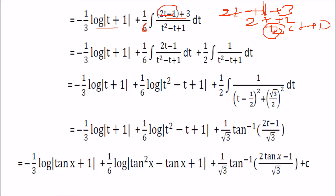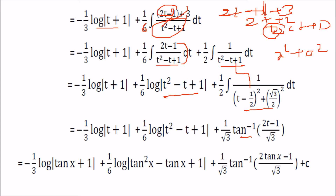We now separate the integral into two parts. One part, taking the substitution as t, gives a log term. The other part is written in the form x² plus a², which integrates to tan inverse of (2t minus 1) by root 3. This is the complete solution.